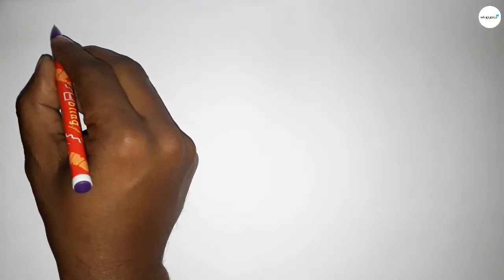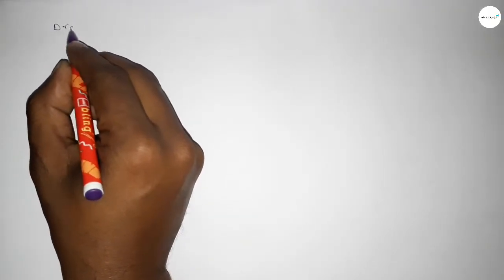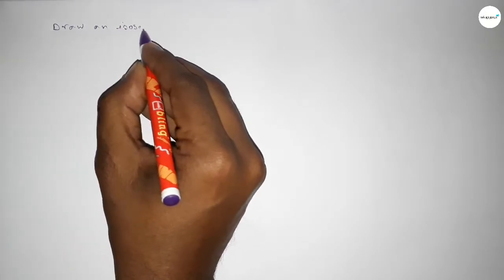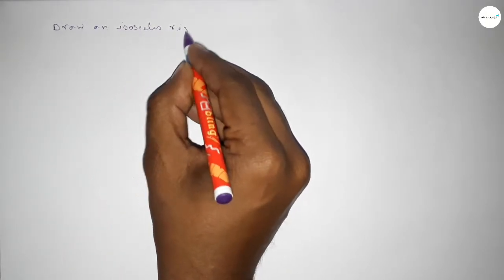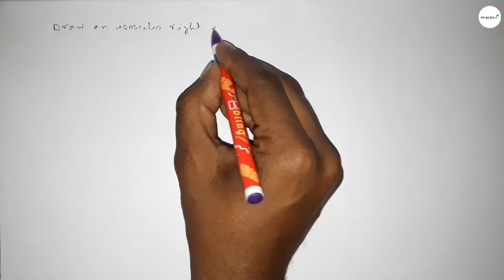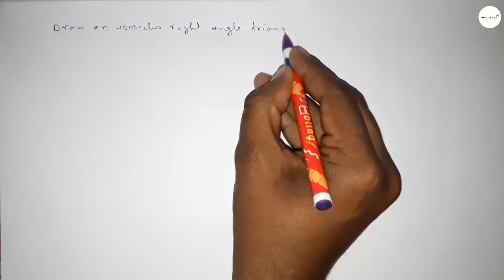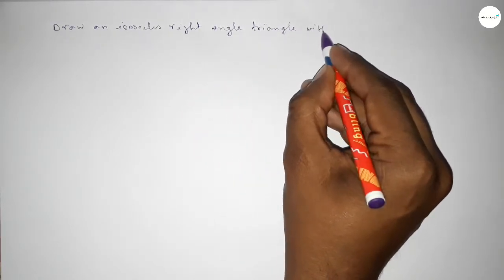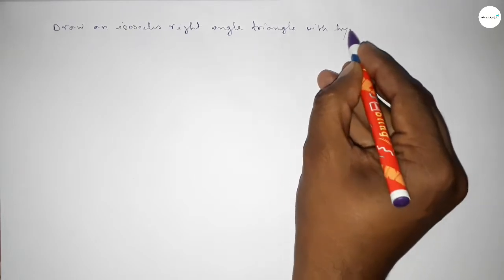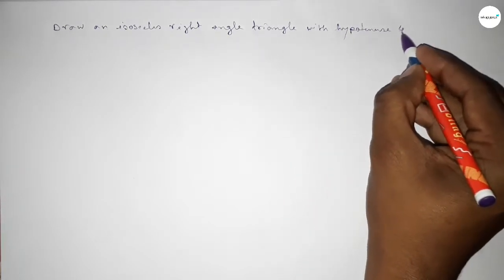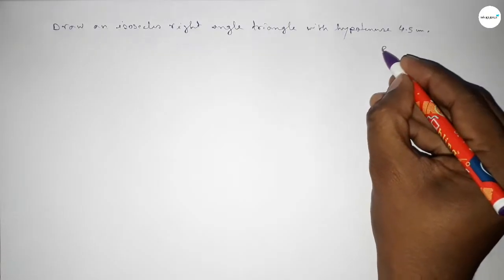Hi everyone, welcome to SI Share Classes. Today in this video we have to draw an isosceles right angle triangle given only the hypotenuse of 4.5 centimeters. So let's start constructing an isosceles right angle triangle.